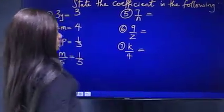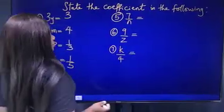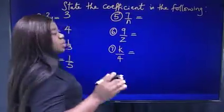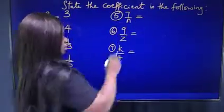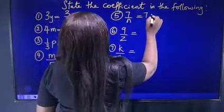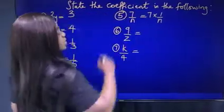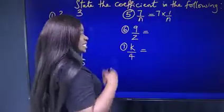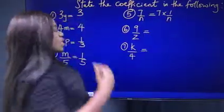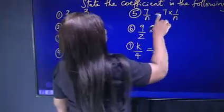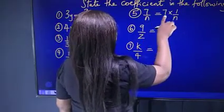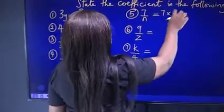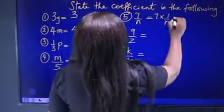The next one: 7 over n. What is the coefficient of n? Now I need you to pay attention. When the unknown is the one dividing — that is, the one in the denominator — there is a specific way to write the coefficient. The first thing you need to do is split this: 7 over n is the same as 7 times 1 over n, because 7 is the numerator and n is the denominator. So 7 times 1 over n gives us 7 over n. Now what exactly is multiplying n? In 7 over n, which is the same as 7 times 1 over n — this part here is 1 over n.